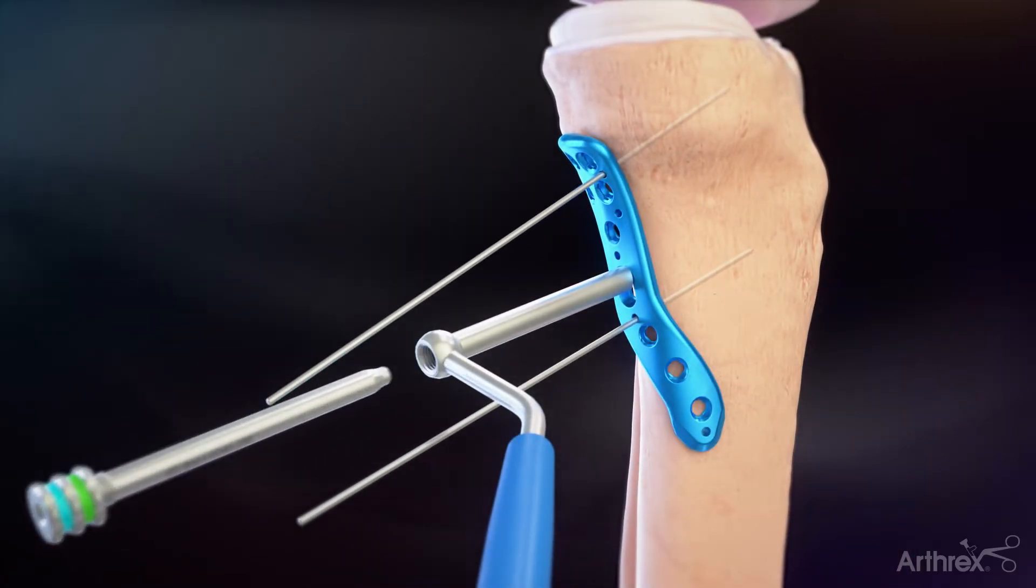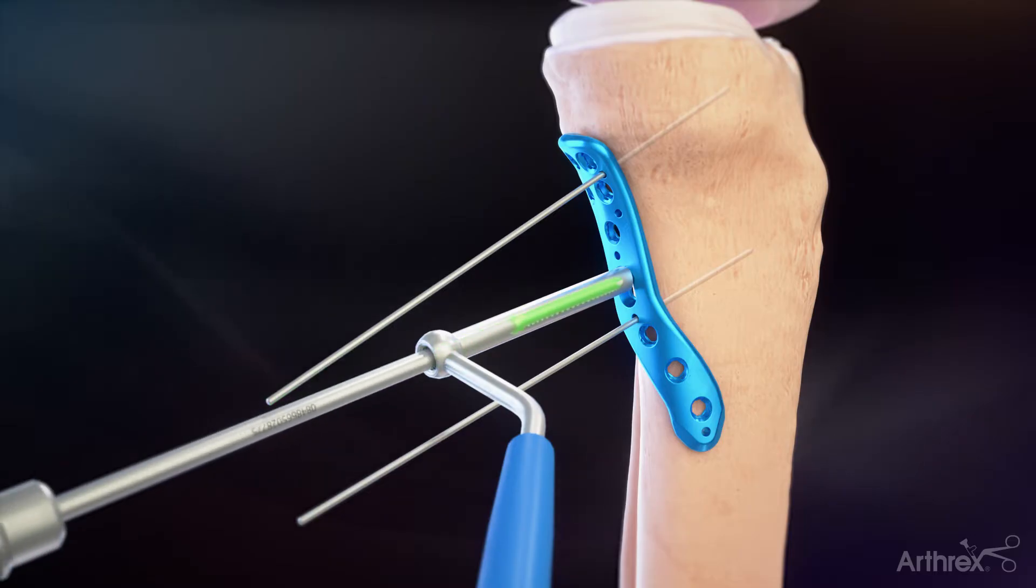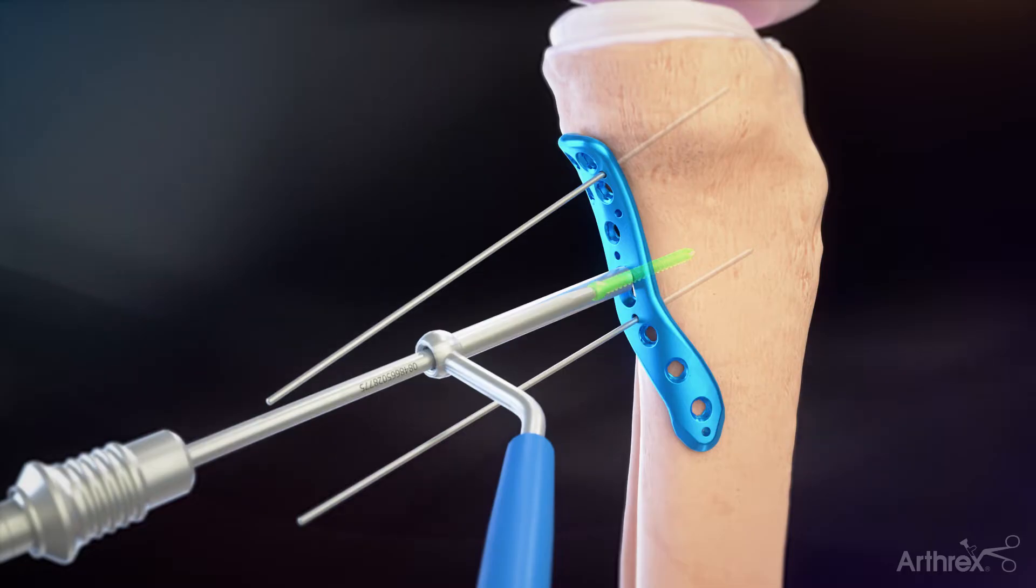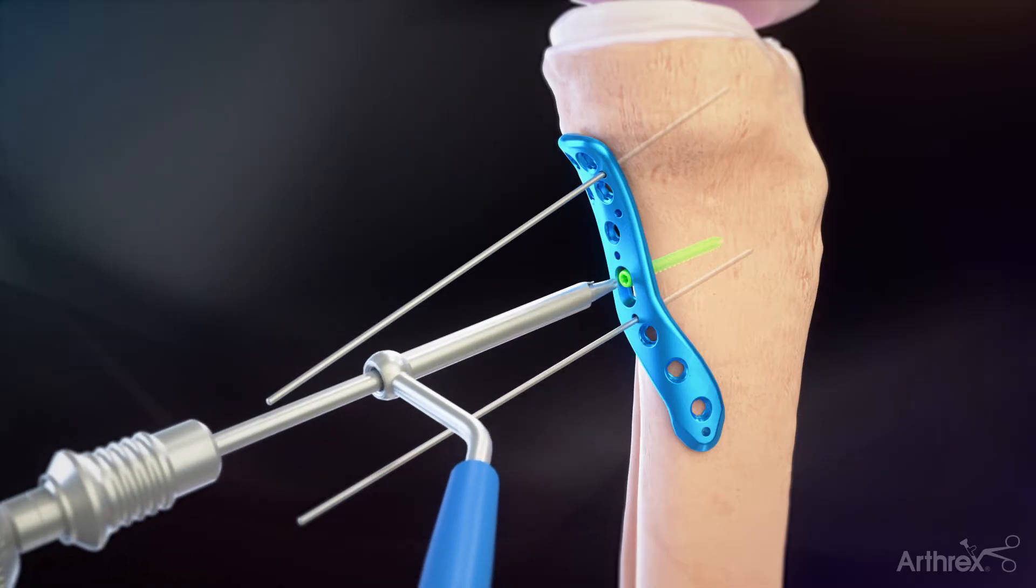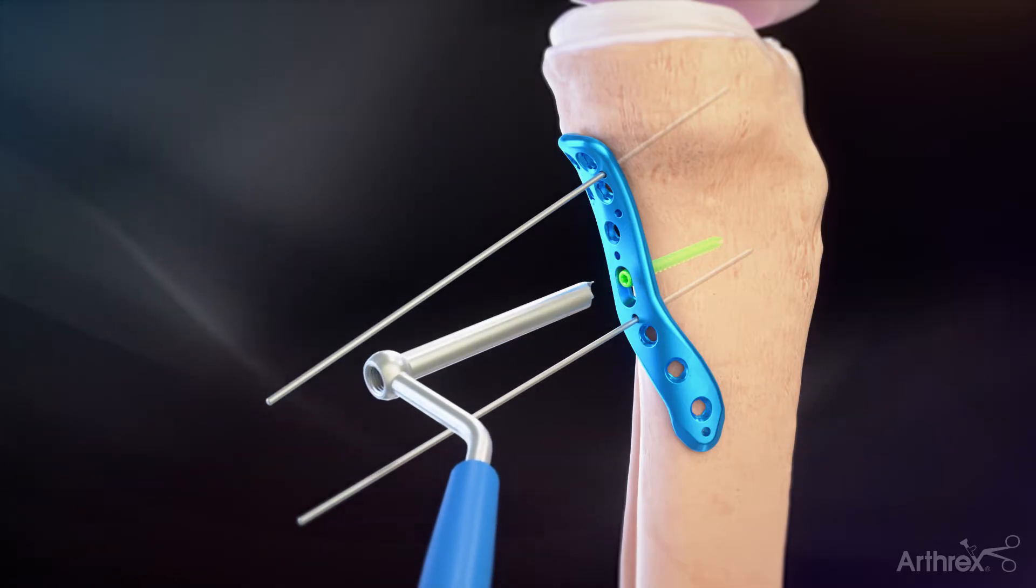Unthread the 2.8 mm drill guide from the screw sheath. Pass the selected screw on a T10 driver through the screw sheath and insert into the bone. When close to the plate, pull back on the screw sheath so it doesn't get trapped between the screw head and the plate.